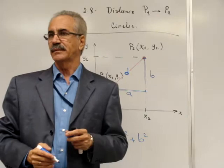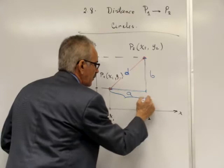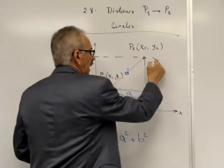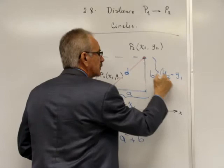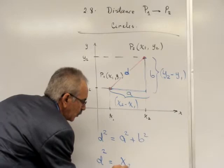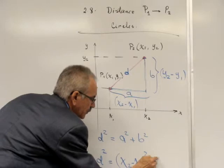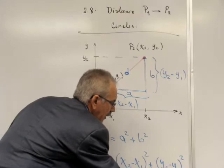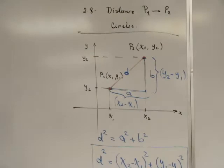As you can see, that distance A can be written as X2 minus X1. So, obviously, the distance squared can be written as (X2 minus X1)² plus (Y2 minus Y1)². This is the equation that we use to calculate the distance between two points.